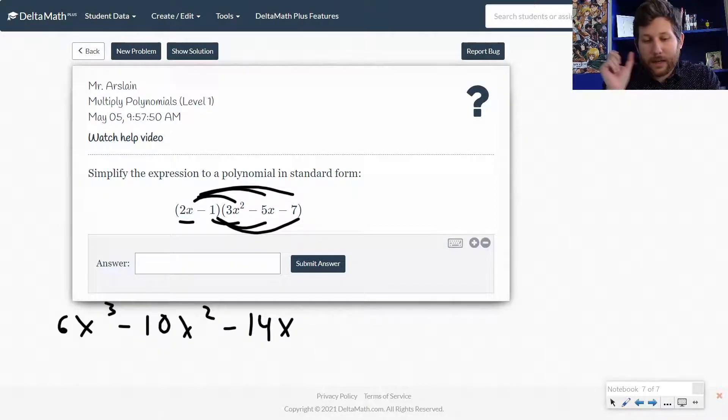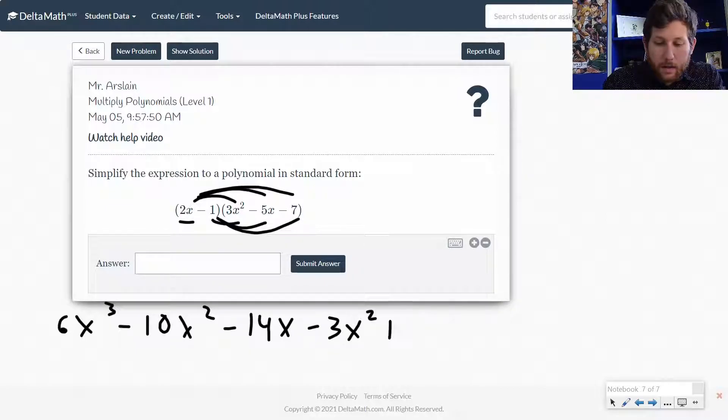Now let's take the negative 1. Notice the 1 is negative, so that is going to change all of our signs as we multiply it. So it's going to be minus 3x squared plus 5x plus 7.